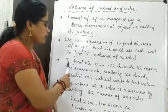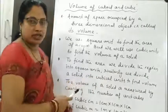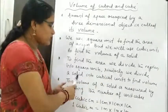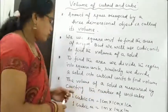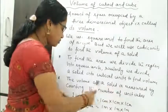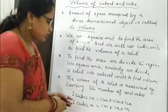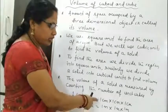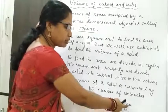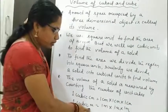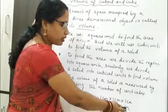To find the area, we divide the region into square units. Similarly, we divide a solid into cubical units to find its volume. The volume of a solid is measured by counting the number of unit cubes. One cubic centimeter equals one centimeter multiplied by one centimeter multiplied by one centimeter. Similarly, one cubic meter equals one meter multiplied by one meter multiplied by one meter.